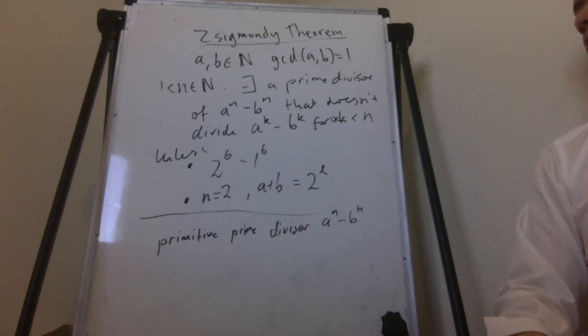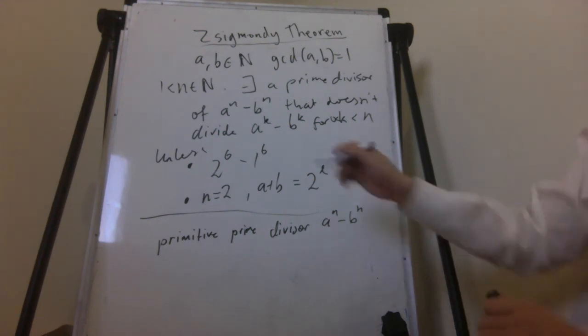If n equals 2, that's a very small case. A plus b is the power of 2. So you get a squared minus b squared is equal to a plus b times a minus b, right?